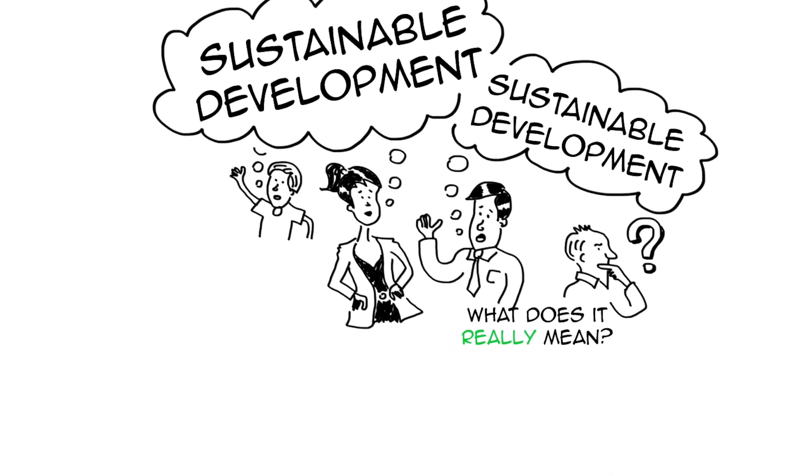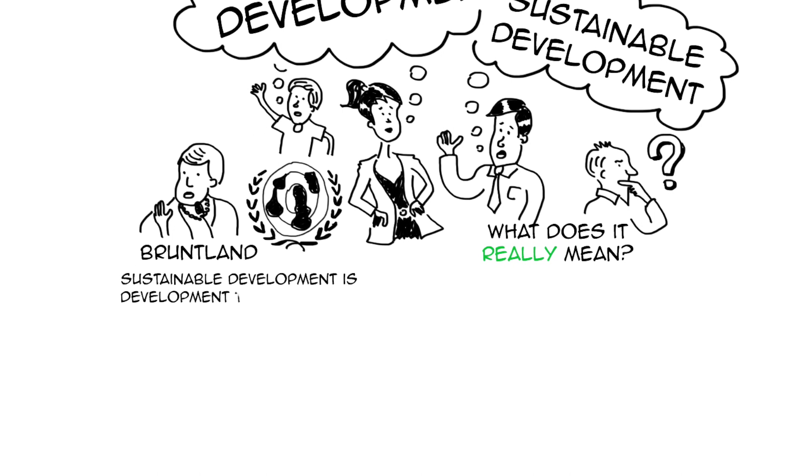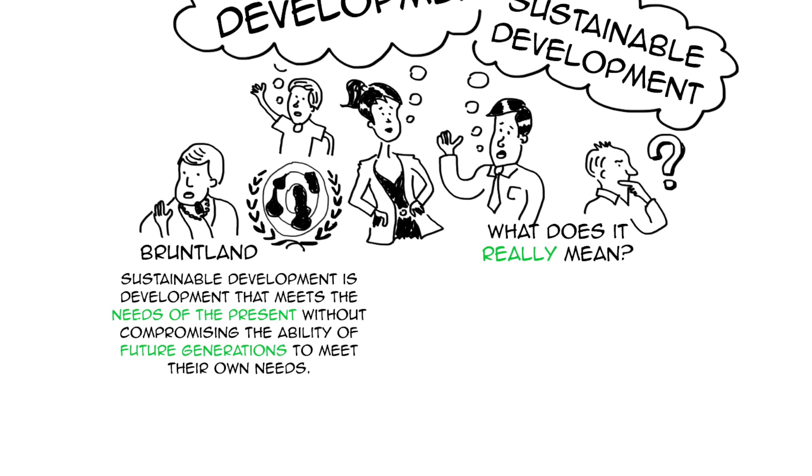So you may be familiar with the Brundtland definition, which is quite common. Sustainable development is development that meets the needs of the present without compromising the ability of future generations to meet their own needs. Although this doesn't exactly tell us what to do on Monday morning, it's a very easy definition to understand and to communicate.